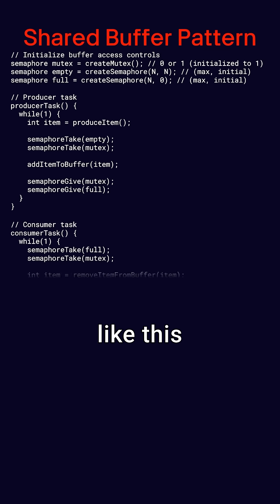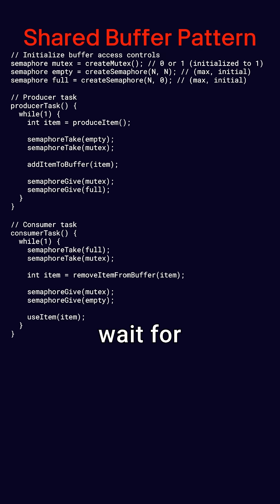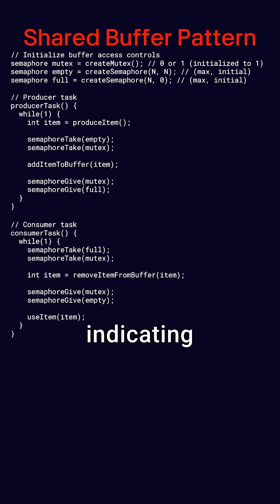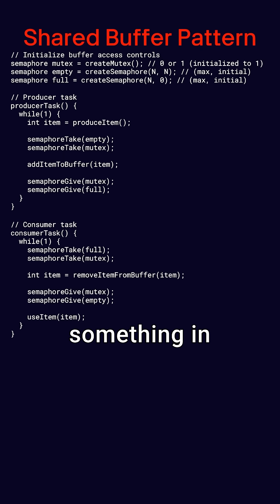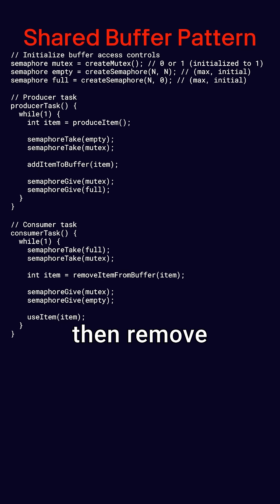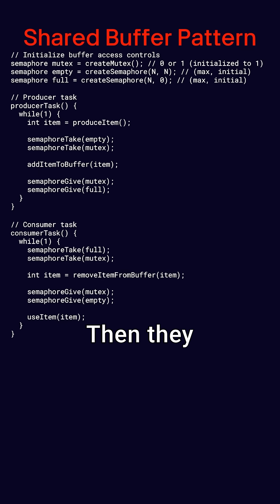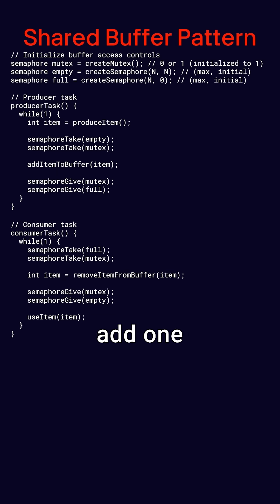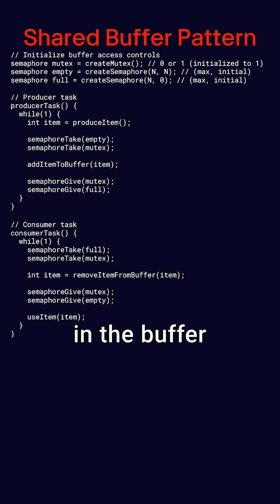Consumer threads look like this. They wait for the full semaphore to be greater than zero, indicating that there's something in the buffer. They acquire the mutex and then remove the item from the buffer. Then they unlock the mutex and add one to the empty semaphore, showing that there's now an empty slot in the buffer.